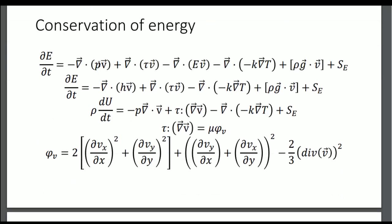You can factor out p and e, and if you know about enthalpy you can quickly see this simplification. Then you can express the conservation of internal energy: u equals a pressure term — pressure times the divergence of v — plus a term representing heat generated by viscous effects, plus the divergence of the thermal flow, and a source term.